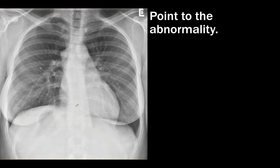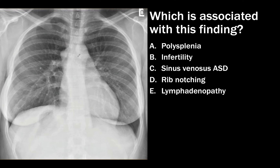Case 34. The question is to point to the abnormality, which is at the right tracheobronchial angle, right where the azygous vein lives. The answer is A, polysplenia. All of the other answer choices were red herrings. Infertility might point to something like ciliary dyskinesia, so that's incorrect.